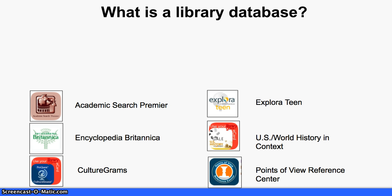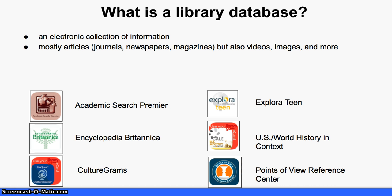So what exactly is a library database? A library database is an electronic collection of information. It's mostly articles — articles from academic journals, newspapers, and magazines. But there are also videos, images, and primary source documents all contained within a library database. A database is highly organized so that you can search for and find the information you're looking for in multiple ways.